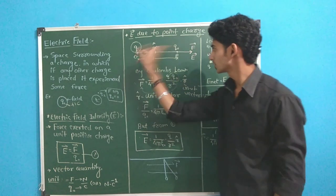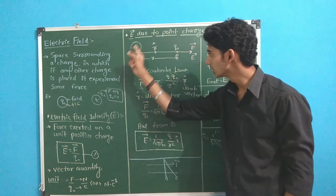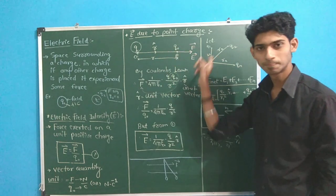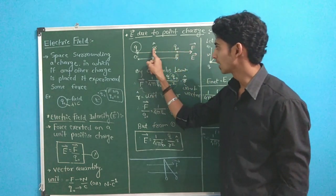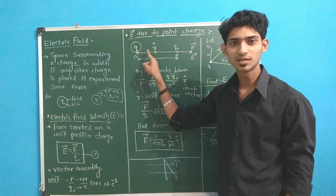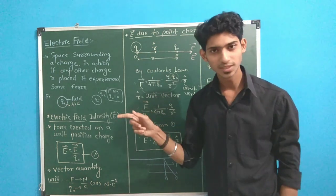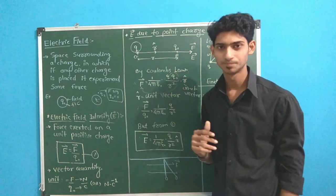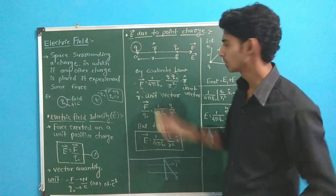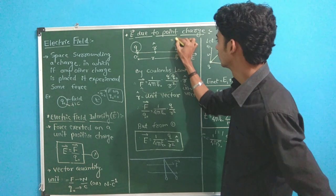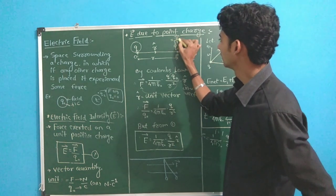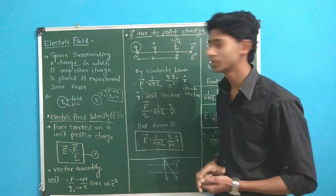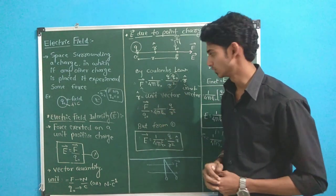Q applies force to Q0. This is the force direction. Obviously, R cap can indicate that force in this direction. It indicates that unit vector. If you have seen unit vector, it is given as vector divided by its magnitude. We will see it later actually.